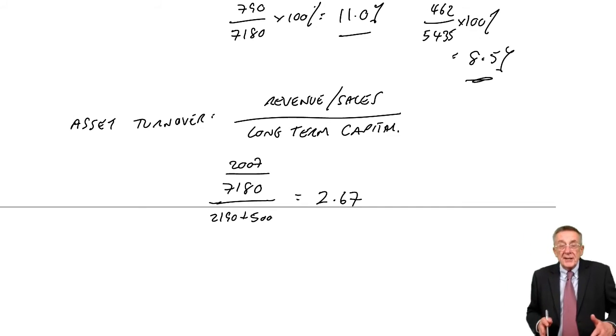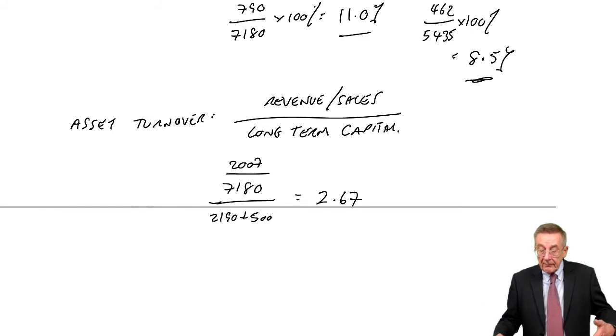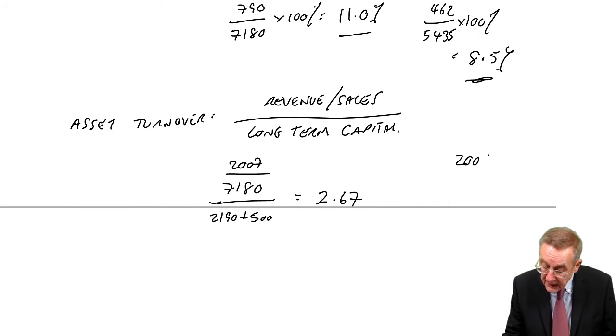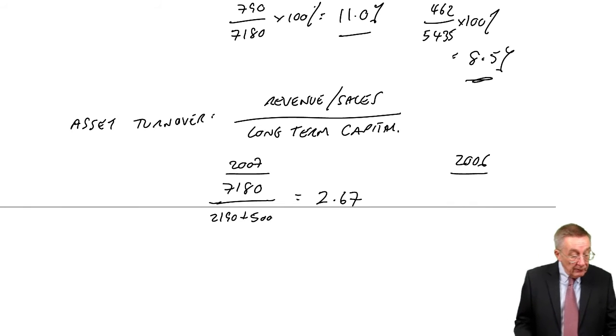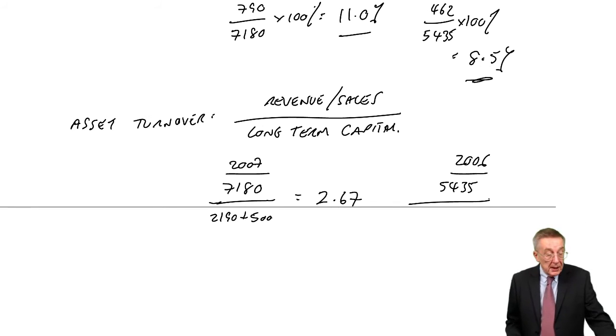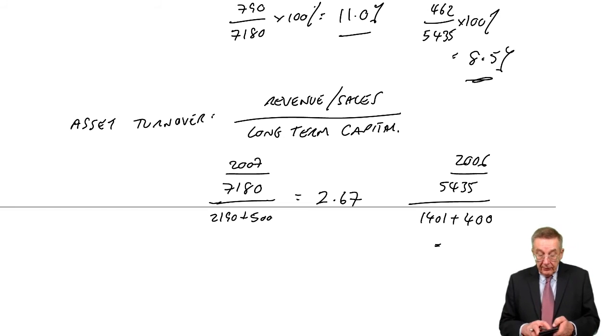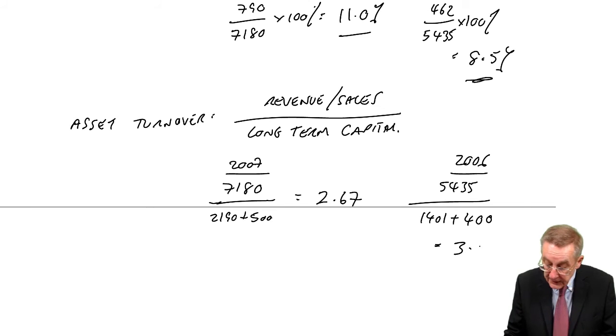What about 2006? Our revenue was smaller at 5,435, but the company was smaller. The total long-term finance, equity, share was 1401, long-term borrowing 400. And so let's divide that through. I get 3.02.